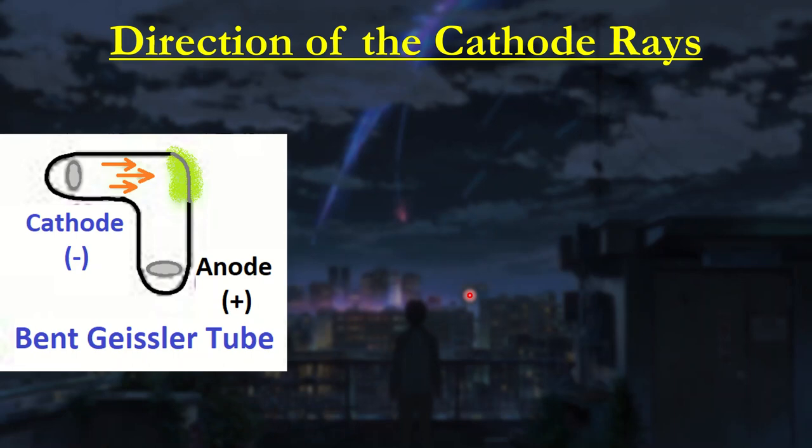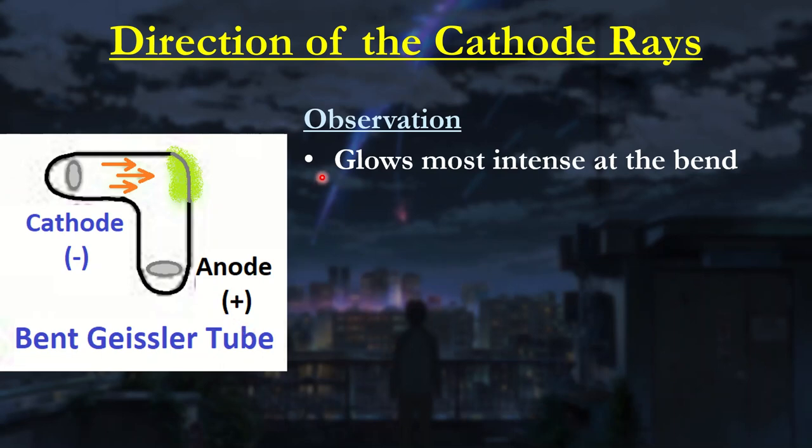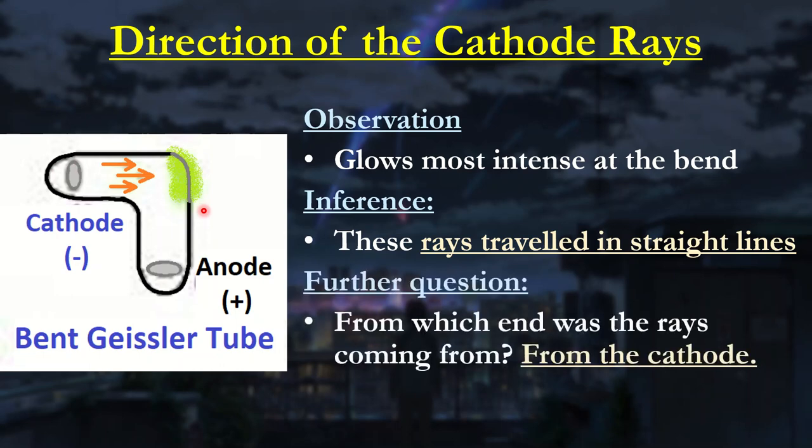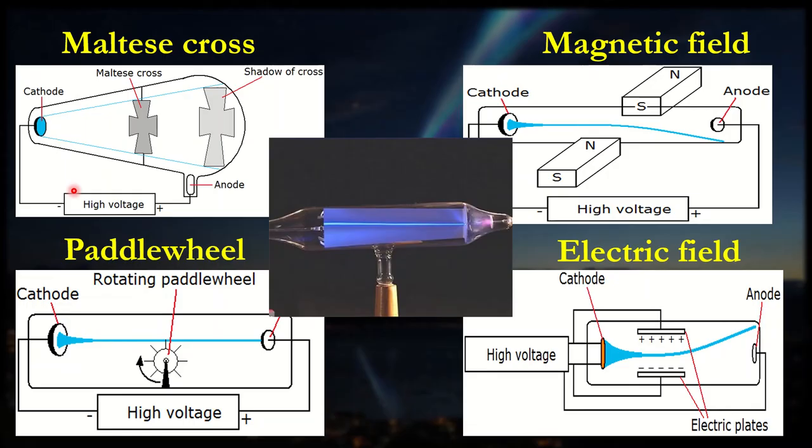Which directions do the cathode rays move? An inventor once made the bent Geisler tube. We had the cathode end and the anode end. If you actually have a look at this diagram, obviously there's an intense glow, that's the fluorescence. What we can say from here is the fact that we see a glow not at the anode but just directly straight path of where the cathode is, or the electrons are moving away from the cathode. That would imply that cathode rays move in straight lines. Another thing we can also say is the fact that the glow is coming from here implies that the electrons are coming from the cathode, hence we call them cathode rays.